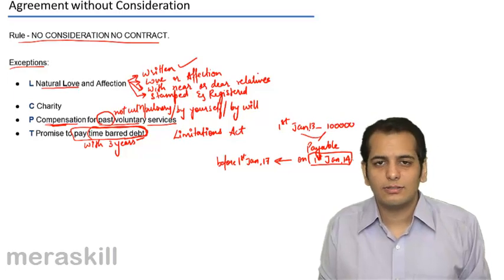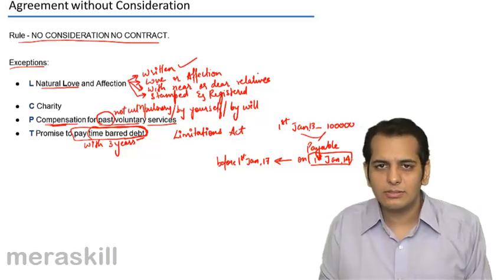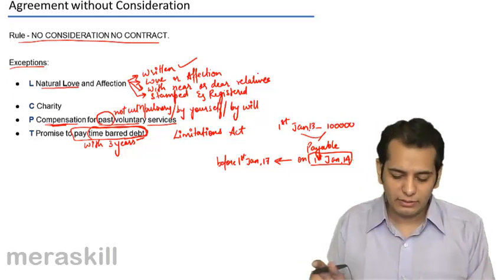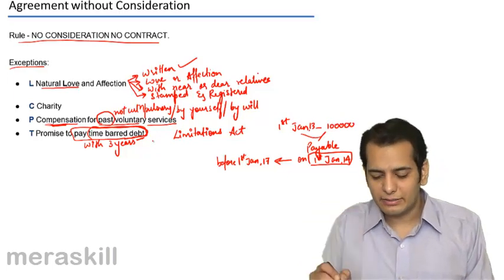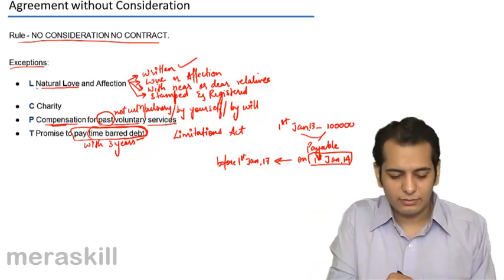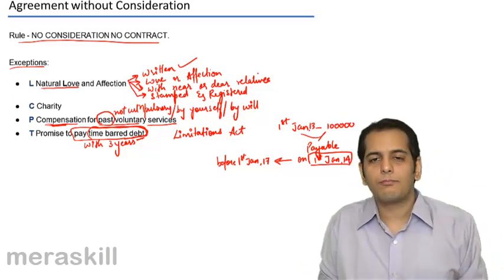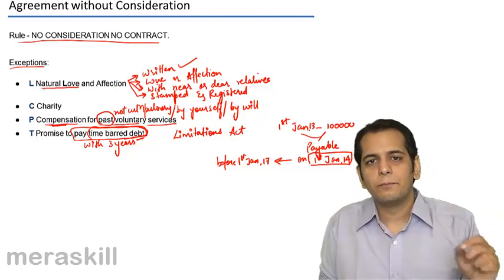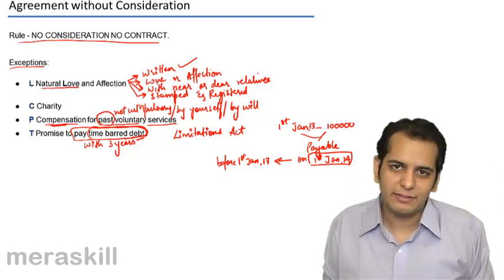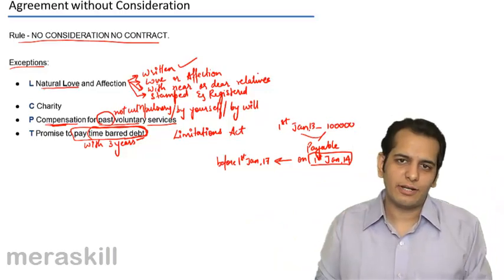This contract is valid. The only condition is this contract should be in writing. It should be written and it should be registered. So a written promise to pay a time barred debt is valid. It becomes a valid contract.